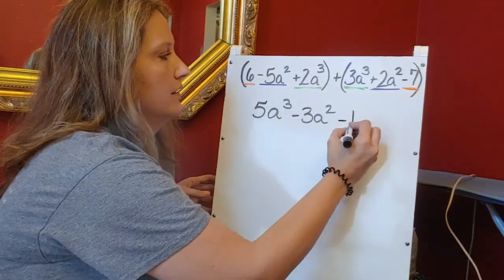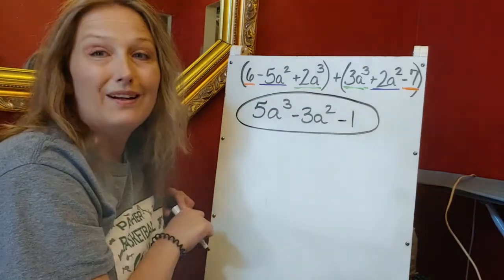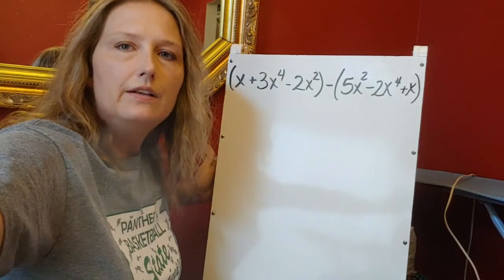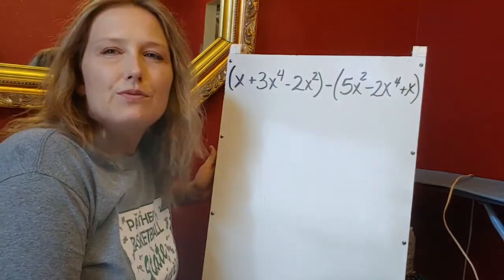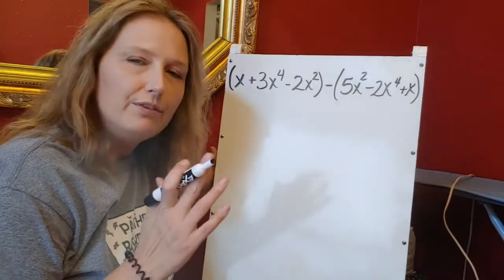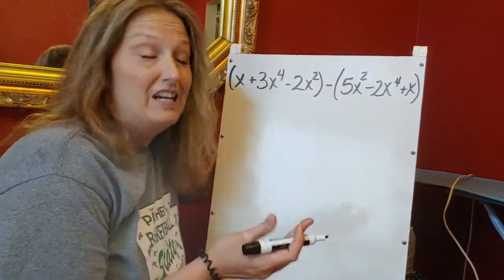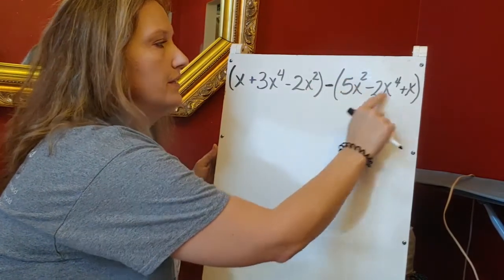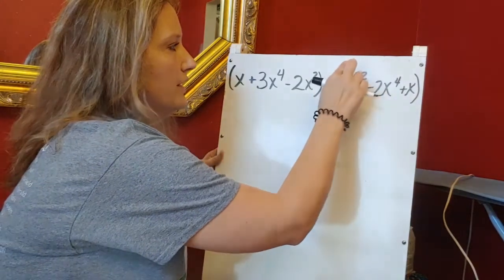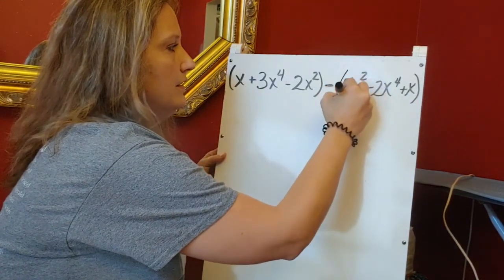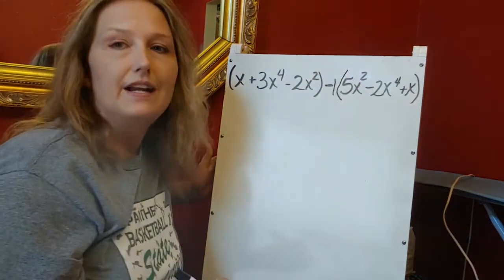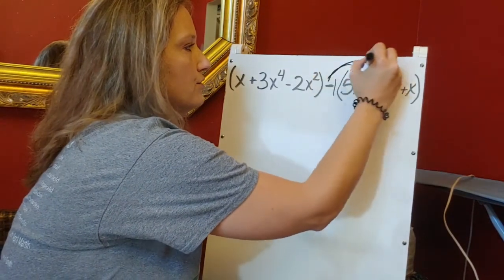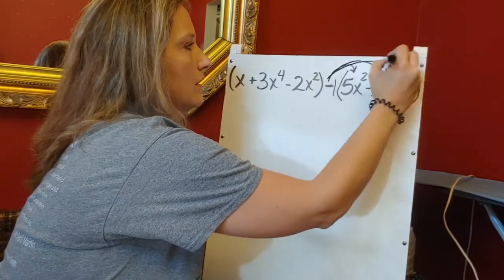Now let's look at subtraction. If I'm subtracting polynomials, this is where you have to be kind of aware of what you're doing. This minus sign right here has to be distributed through the second set of parentheses. We know that even though it's not written, that's a negative one where we have that minus sign. So before I do anything, I have to distribute that negative one all the way through my parentheses.